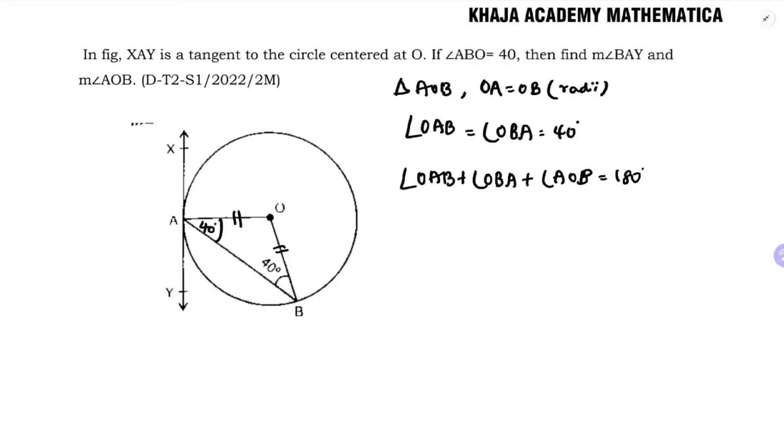OAB is 40 degrees, OBA is 40 degrees, and angle AOB which I need to find equals 180. So 80 plus angle AOB is 180 degrees, which means angle AOB is 180 minus 80 degrees, which is 100 degrees.